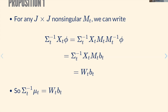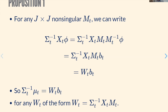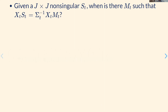For the first proposition: given any M, we can write sigma-inverse times X times phi in a specific form. Taking M-inverse times phi as the vector of prices of risk, and sigma-inverse times X times M as the matrix W, we get sigma-inverse times mu equals W times b. So we've found the mean-variance frontier as long as W takes this form, under the assumption that risk premia are linear in characteristics.